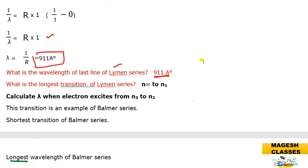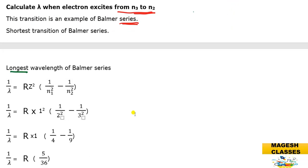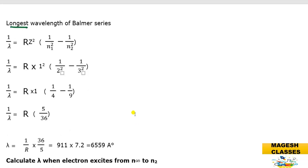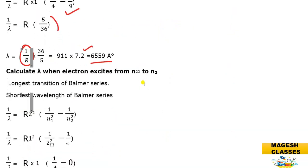When the electron returns from n=3 to n=2, it is called the Balmer series. This is the first line of the Balmer series — the shortest transition and longest wavelength of the series. Substituting: 1/λ = R × (1/2² − 1/3²) = R × (1/4 − 1/9) = R × 5/36. Calculating with 1/R = 911 Å gives λ ≈ 6563 Å for the first line of the Balmer series.